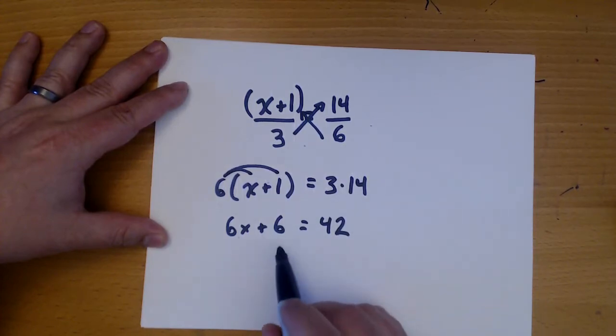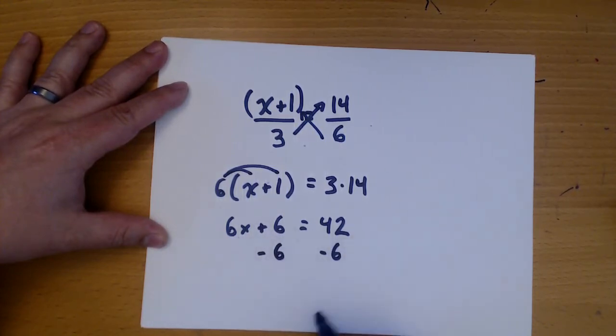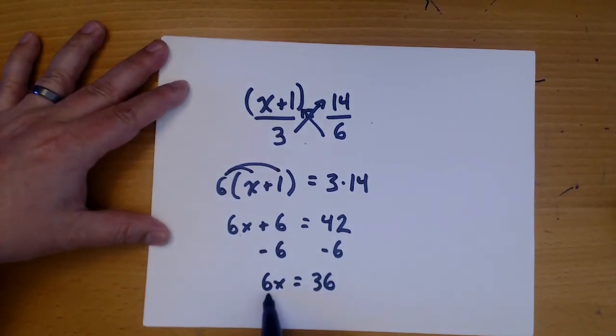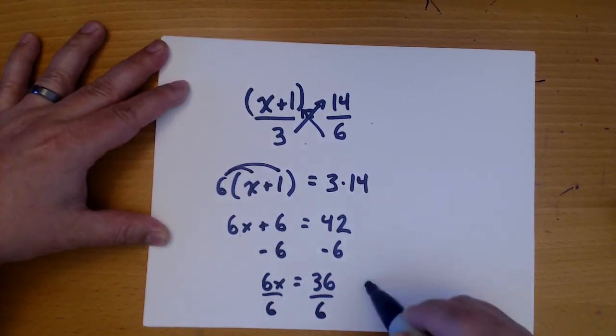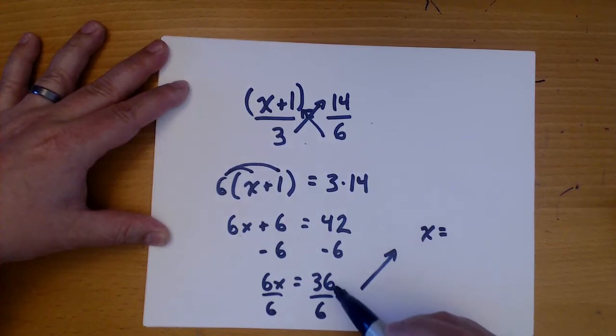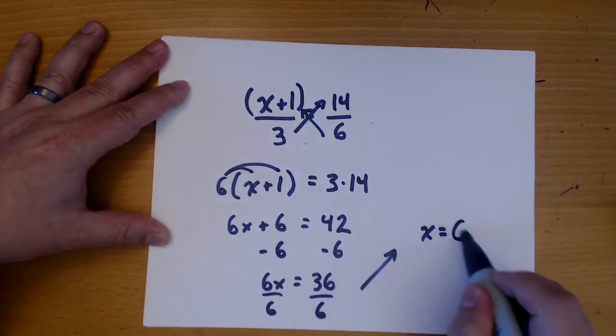Now we need to get x alone. So this 6 has to go away first. And now to get rid of that 6 we divide by 6. And 36 divided by 6 is 6.